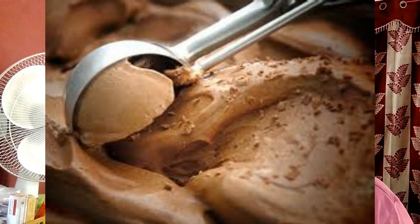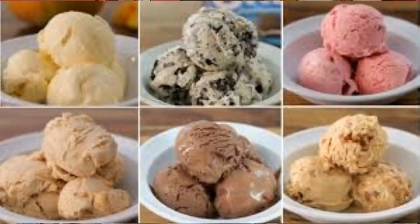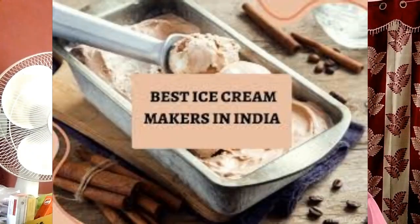Step 4 is whip the egg yolks until thickened — whip means stirring. Step 5 is slowly add 1 cup of the hot milk mixture to the egg yolks. Step 6 is pour the egg yolk mixture into the pot of hot milk.